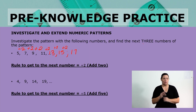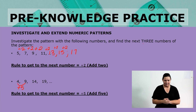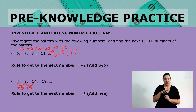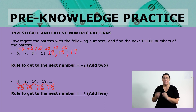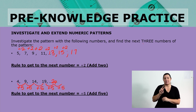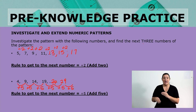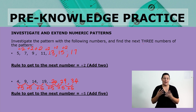Let's find the next three numbers of this pattern. We have 4, add 5 gives 9, add 5 gives 14, add 5 gives 19. Adding 5 from 19 gives us 24. Adding 5 again gives us 29. And for the last one, from 29 we add 5 again and that gives us 34. So those are the next three numbers of our pattern.